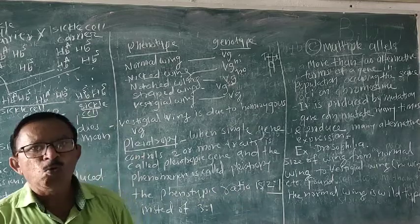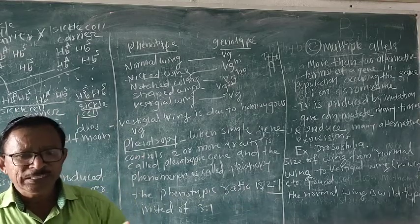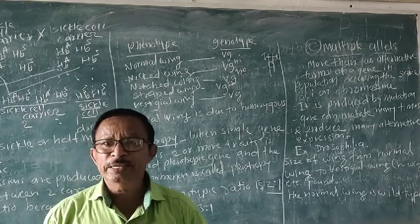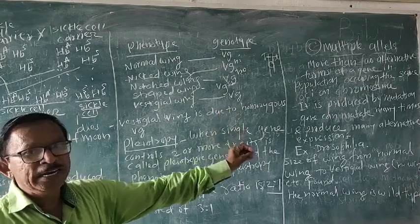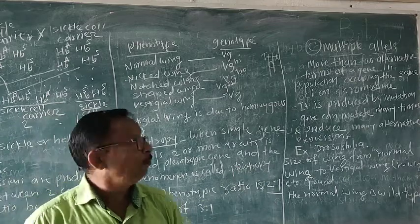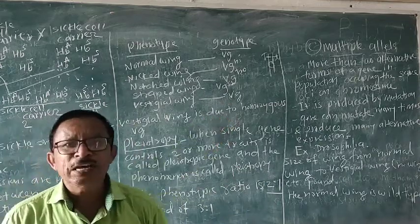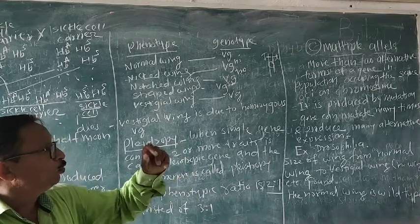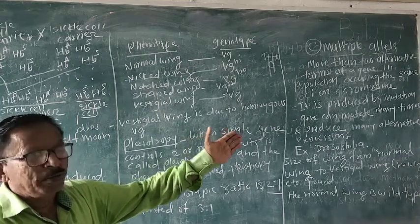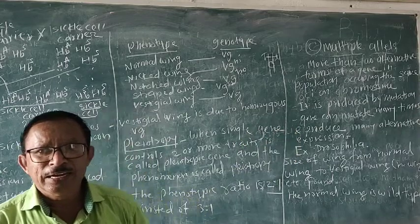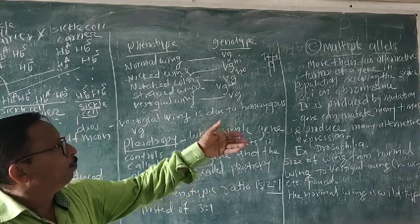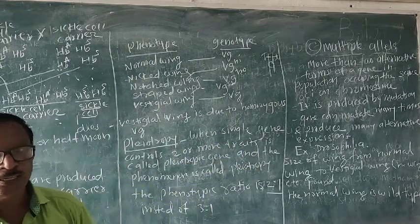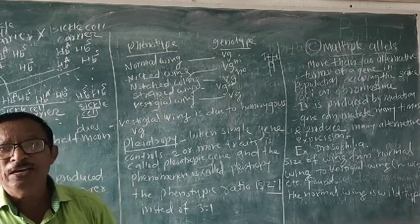The normal wing is the wild type. When we are studying or doing the experiment, we have to use the wild type first; then we are able to make the hybrids. Multiple alleles: when more than two alternative forms of a gene in the population are present on the same locus on the chromosome, it is called multiple alleles. Mutations are responsible for multiple alleles, and there may be many alternative expressions and alternative forms of the gene in the population.